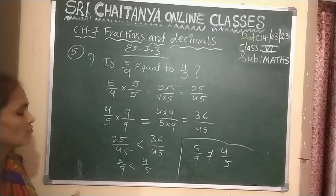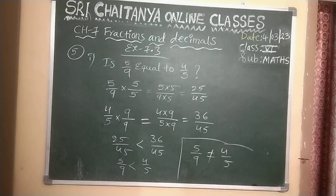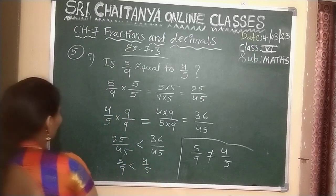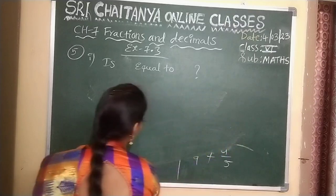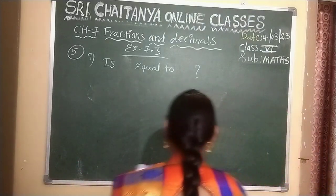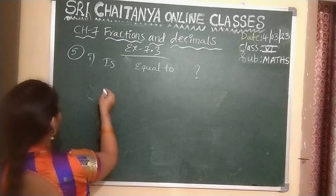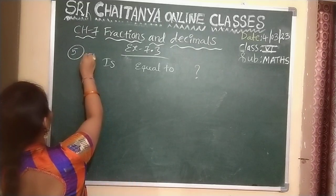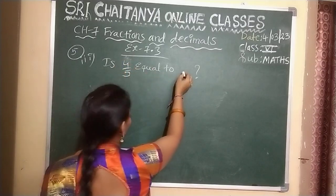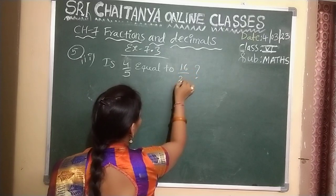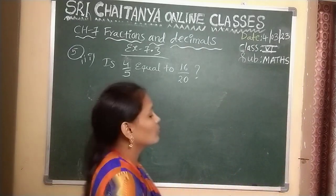Okay, this is the process of how we should do it. This model has four bits; I explained the first one. Now the third bit: is 4 by 5 equal to 16 by 20? Is 4 by 5 equal to 16 by 20? Let us see.